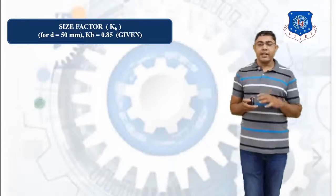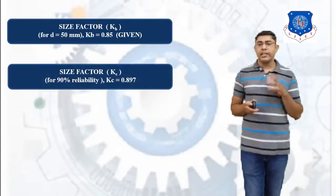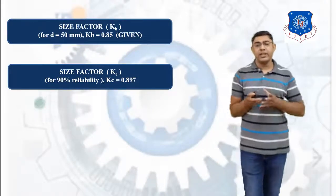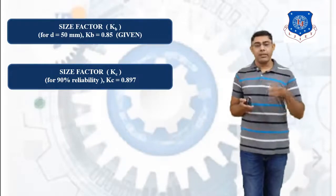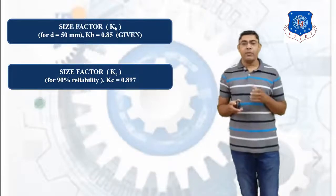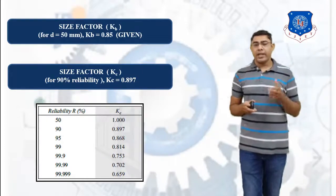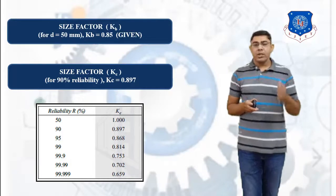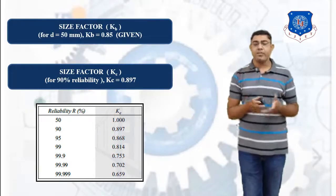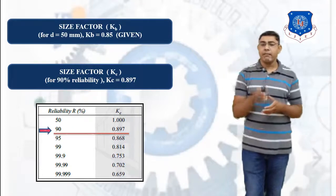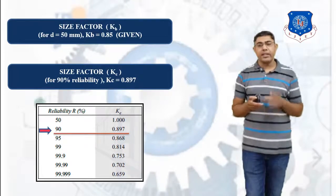Next, calculate the reliability factor KC. From the reliability table, for 90% reliability, the value of KC is 0.897. The table provides KC values for different reliability percentages, and at 90% reliability we read KC = 0.897.